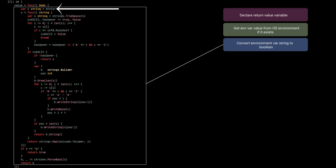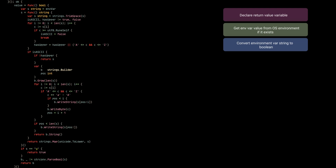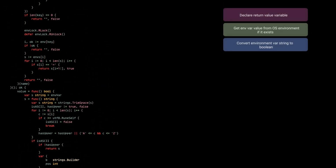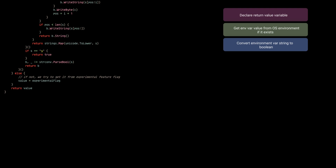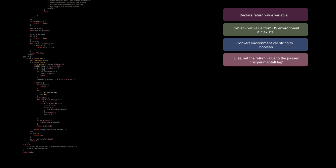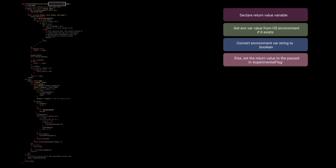The variable `ok` is then used to determine if we'll execute this logic, which simply converts the string value of `environment_var` taken from the OS environment to a bool, and then that bool will be assigned to the return value declared at the beginning of the function. Otherwise, if the named environment variable was not found in the OS environment, we execute the logic in the else branch, which simply sets the return value to the passed-in `experimental_flag` parameter.